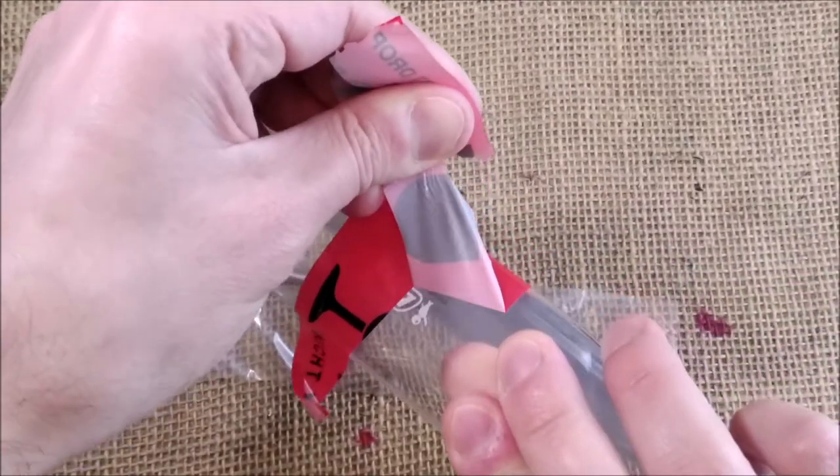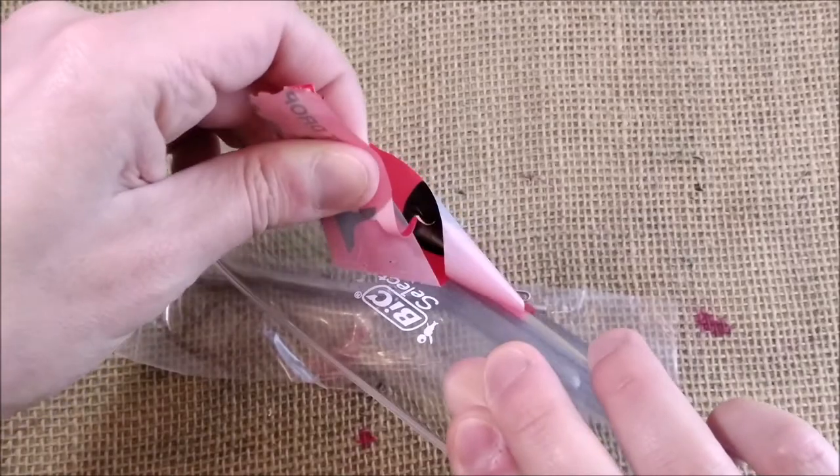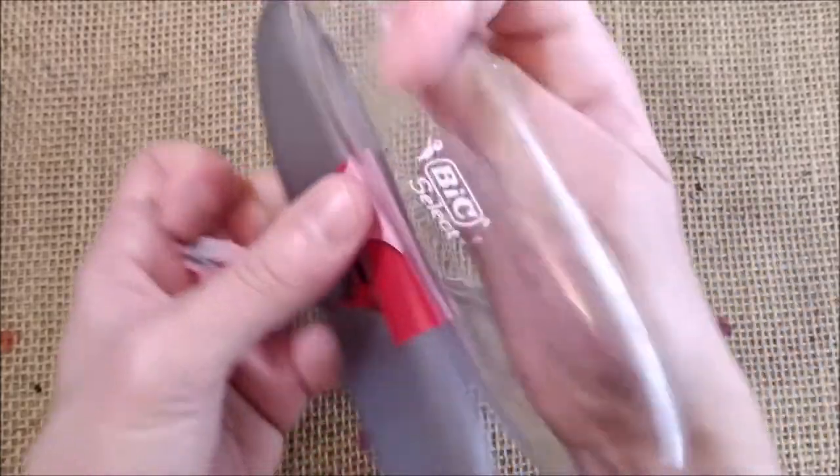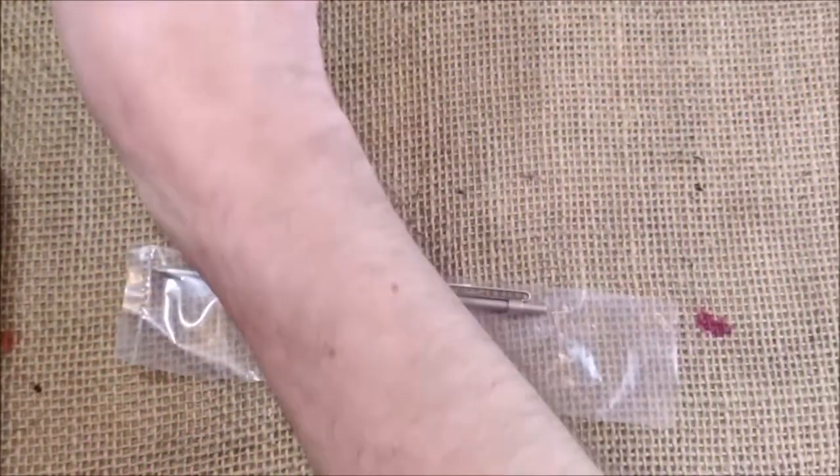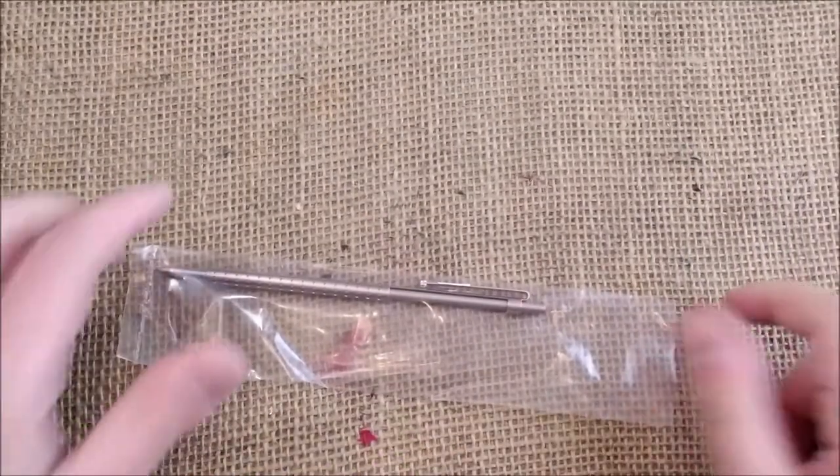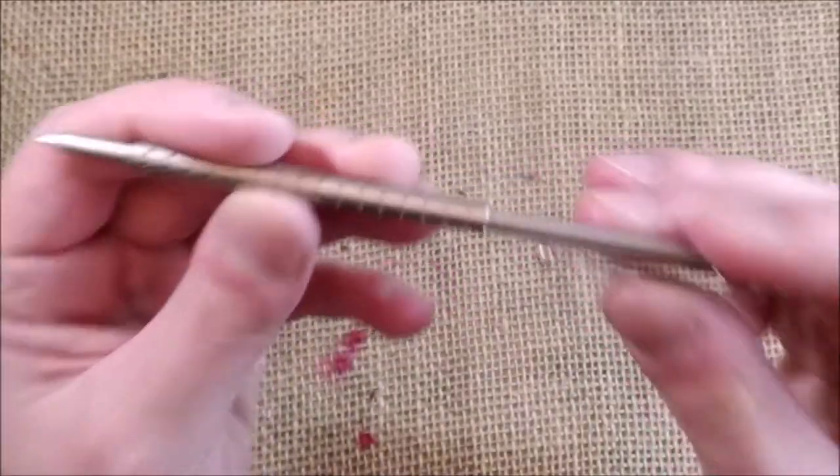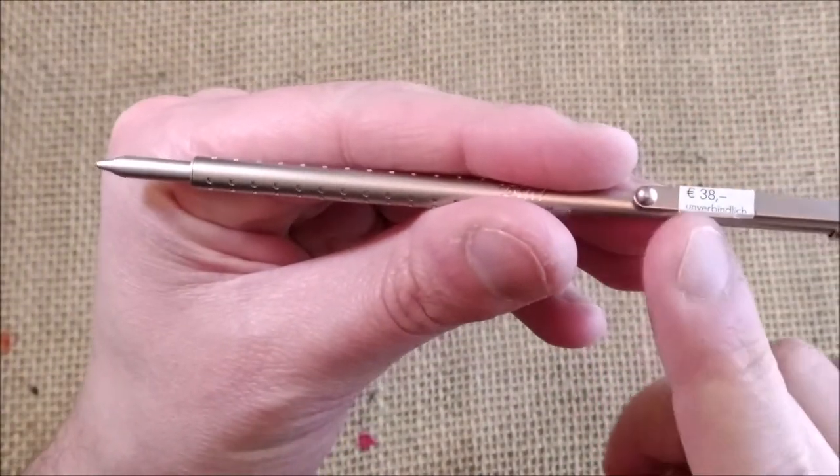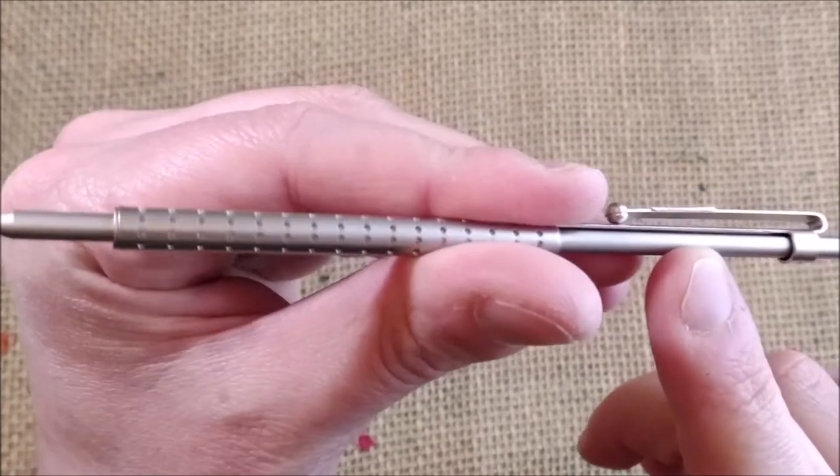And here we have, funny, the box, the pen case is from BIC. Nice, it's always nice to have a stationary branded box for something that's not a BIC. And what is this? This is a mechanical pencil, a very slim one, and I don't know if you've ever seen this one, it's not that common.